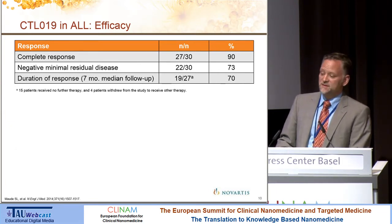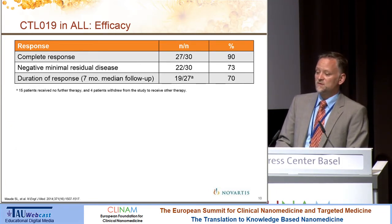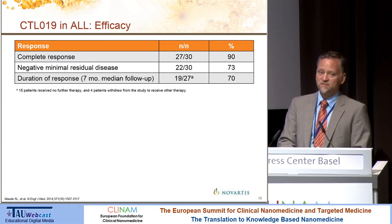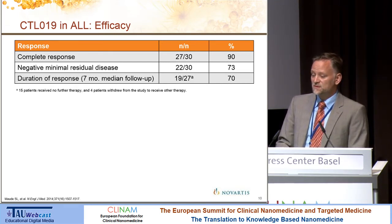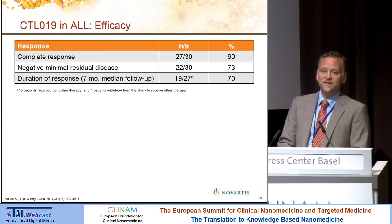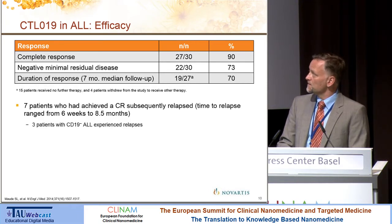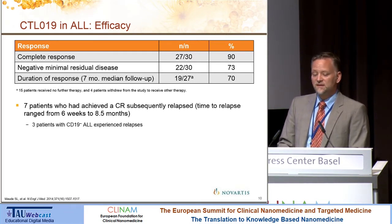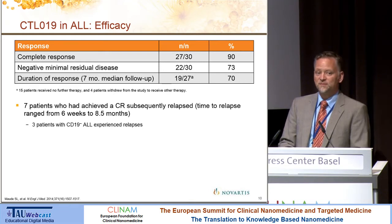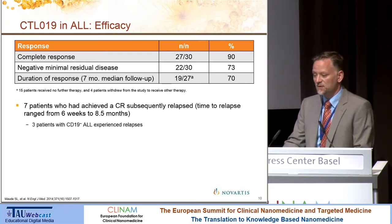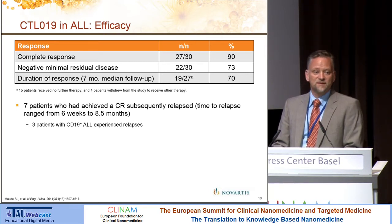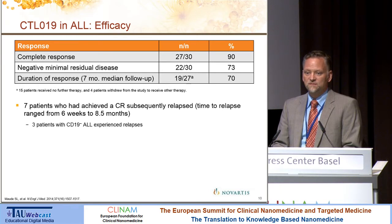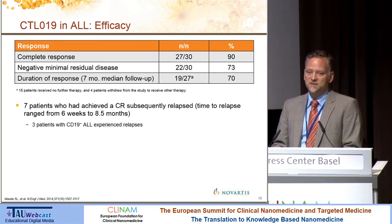For pediatric ALL it's quite interesting — we observe a complete response in 90% of patients treated. These were patients who were totally refractory to prior therapies; many had also undergone allogeneic bone marrow transplantation. Many also have complete disappearance of disease at the molecular level. We do see escapes: seven patients who achieved complete remission relapsed, and three did so by down-regulating CD19. If there is selective pressure for a given antigen, the easiest escape is just to lose antigen expression.